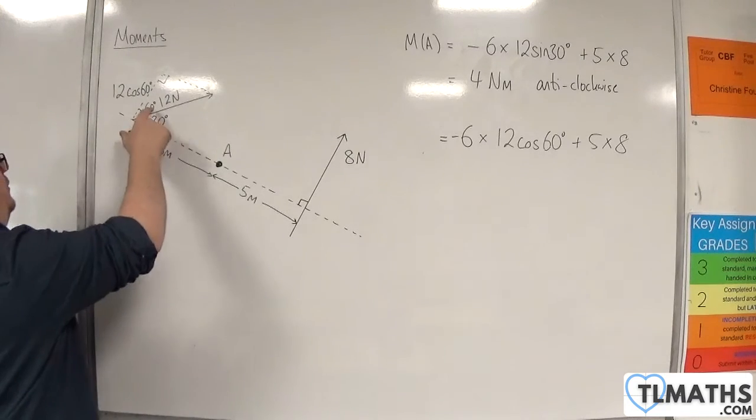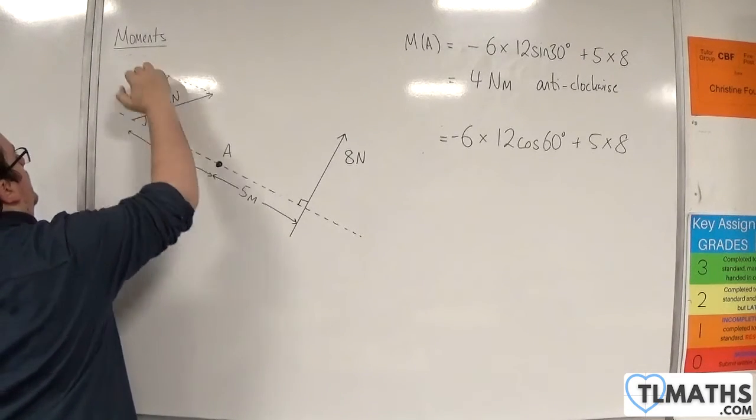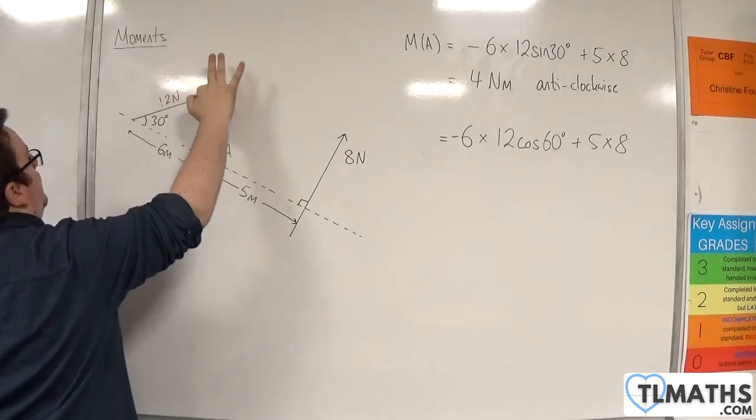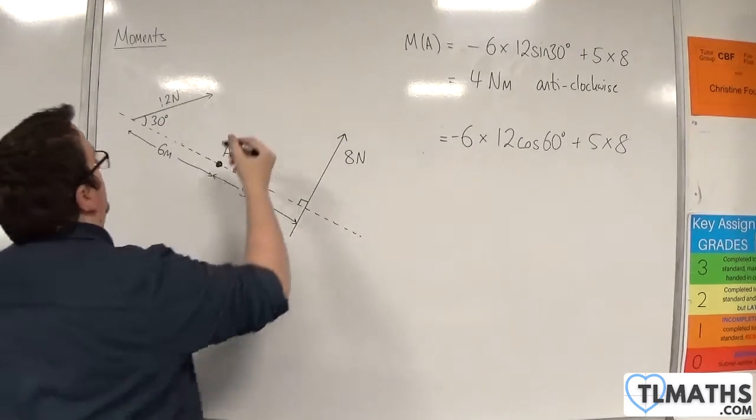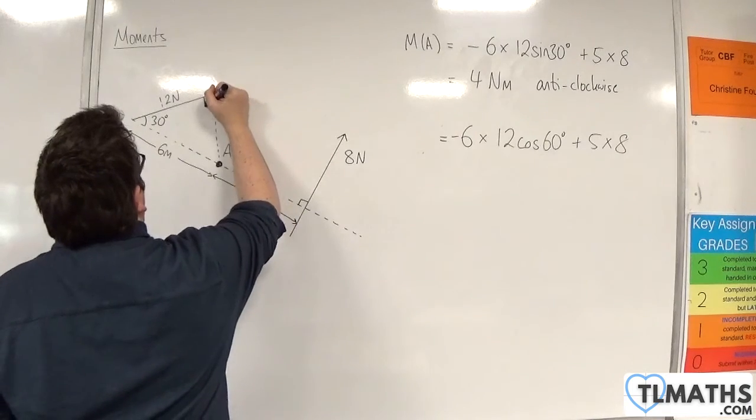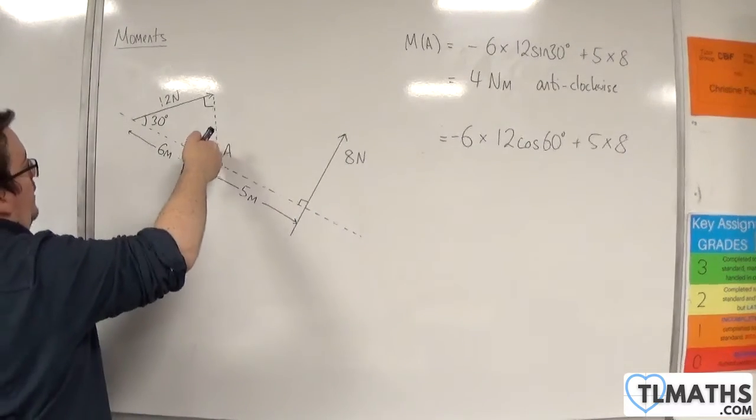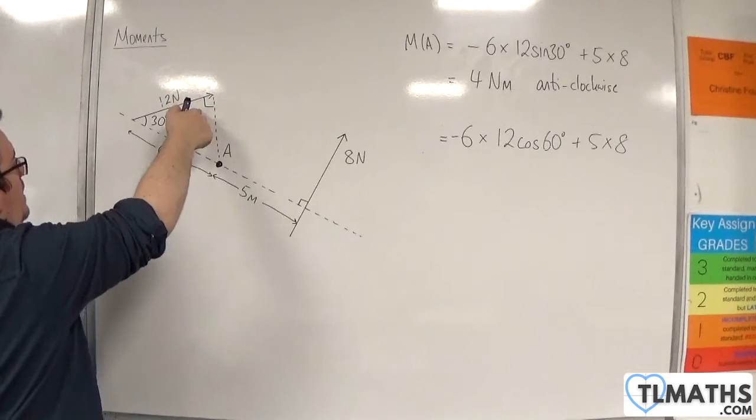So that's an alternative. Now, my third way of doing it would be to use this right-angled triangle here. OK, so you draw a line to your force, and that makes a right angle.